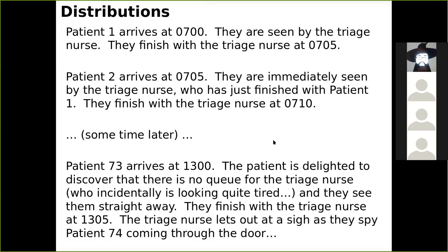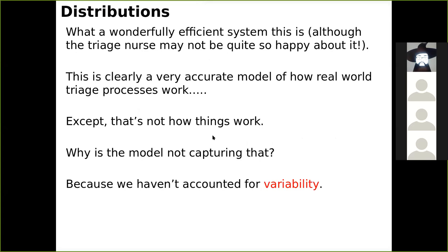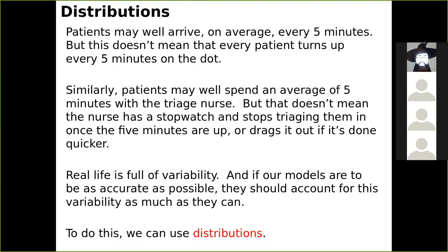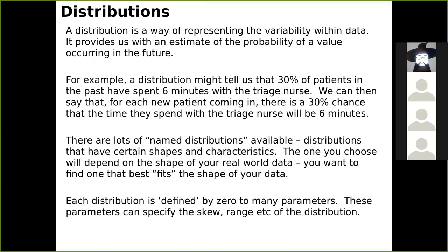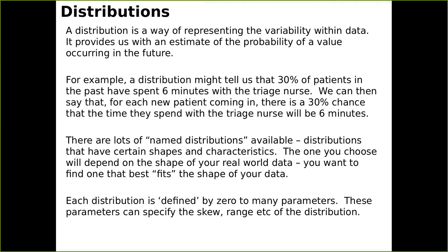The way we capture variability within a system is using something called distributions. Distributions are essentially ways to emulate variability within real world data. They provide an estimate of the probability of a certain value occurring in the future. So we can use a distribution to say: when we look at past data, yes, on average patients spend five minutes with a triage nurse, but 30% actually spend seven minutes, 20% spend eight minutes, and 5% spend 15 minutes. It's really important to make sure we're capturing all of that.